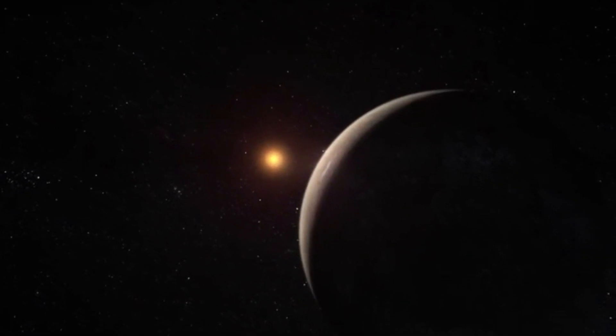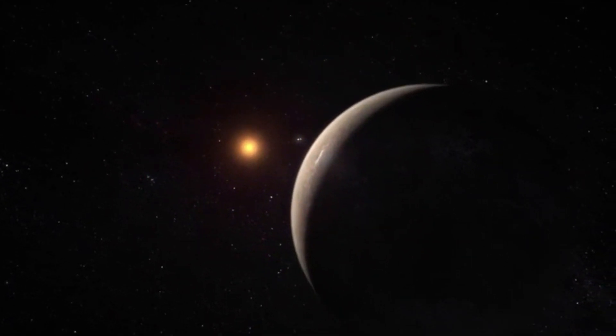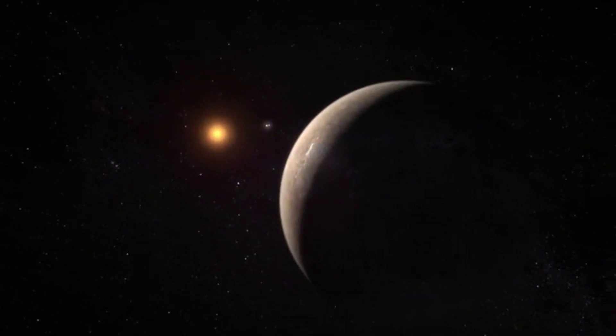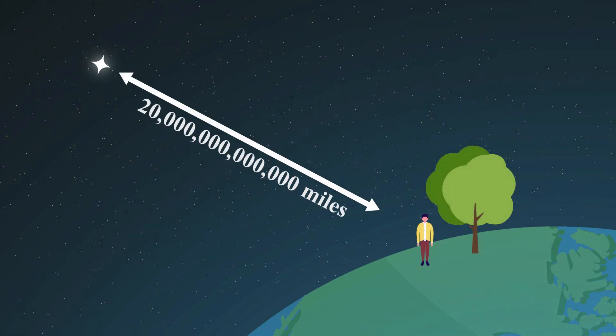Proxima Centauri is the closest star system to Earth and is considered the nearest interstellar destination. It is about 20 trillion miles, or about 4 light years away from Earth.